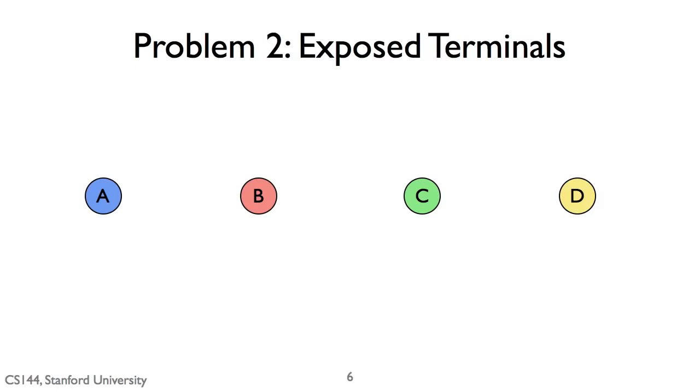So the second problem is what's called an exposed terminal, and this is kind of the reverse of a hidden terminal. So imagine this case where B wants to transmit a packet to A, and C wants to transmit a packet to D. But now A can't hear C, right? So A can't hear C.